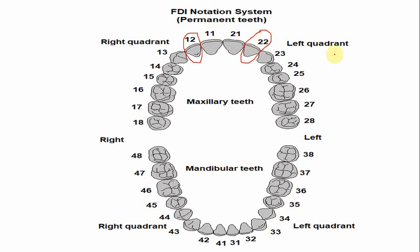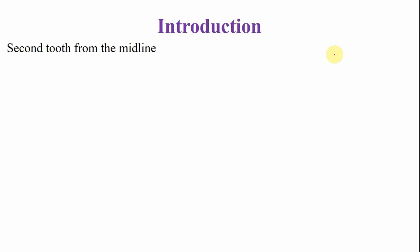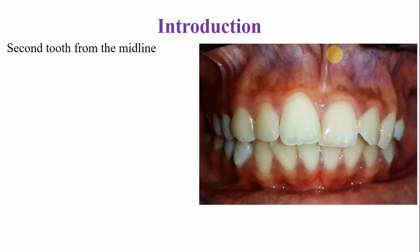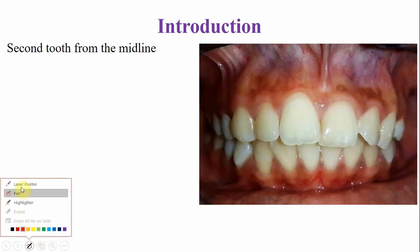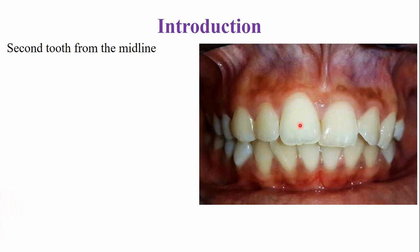If you are interested to learn more about tooth numbering systems, a link to the lecture is given in the description of this video. The maxillary lateral incisor is the second tooth from the midline. The maxillary central incisor is the first tooth from the midline, on both the left and right sides.